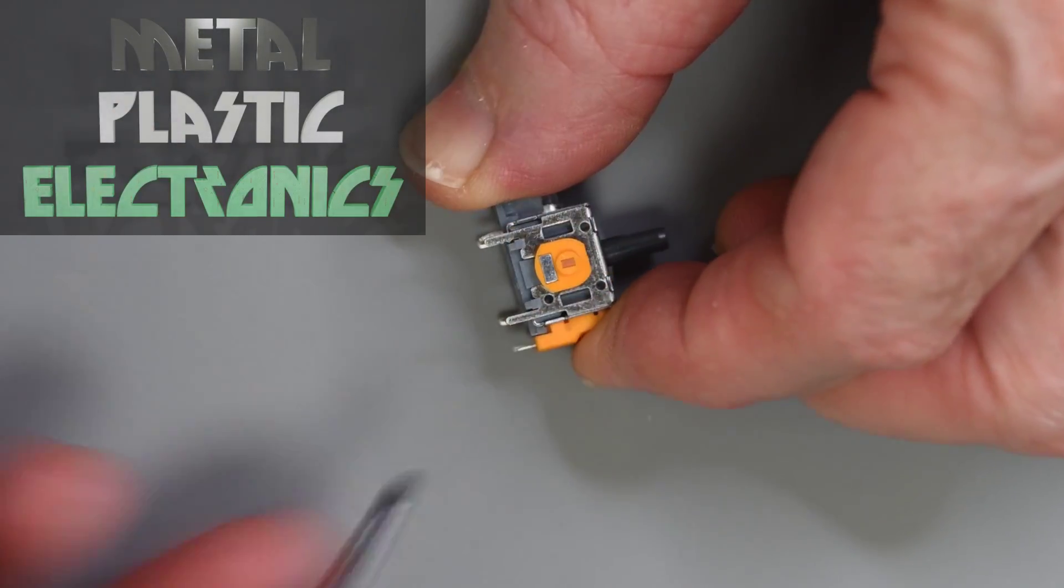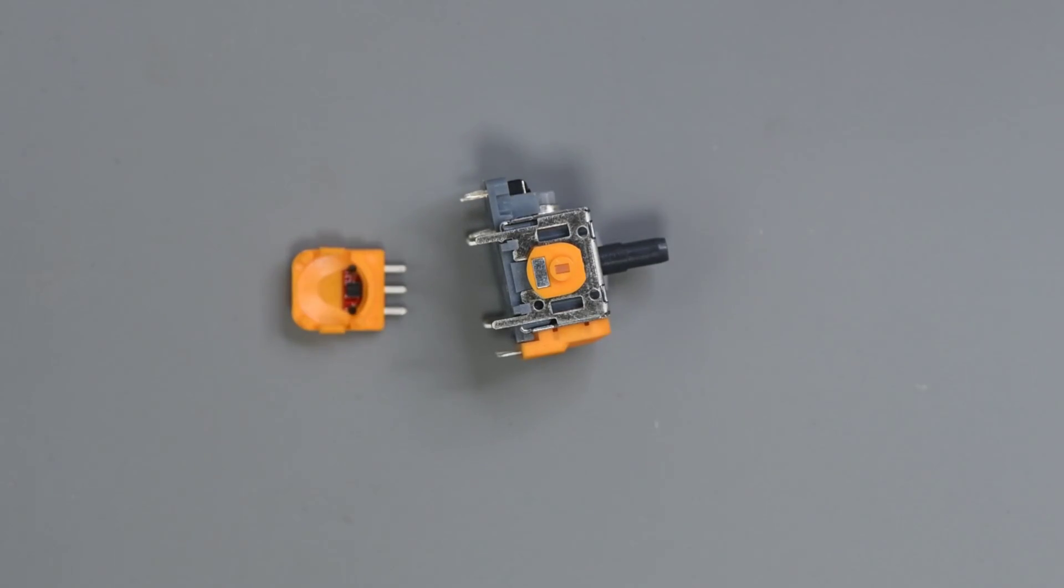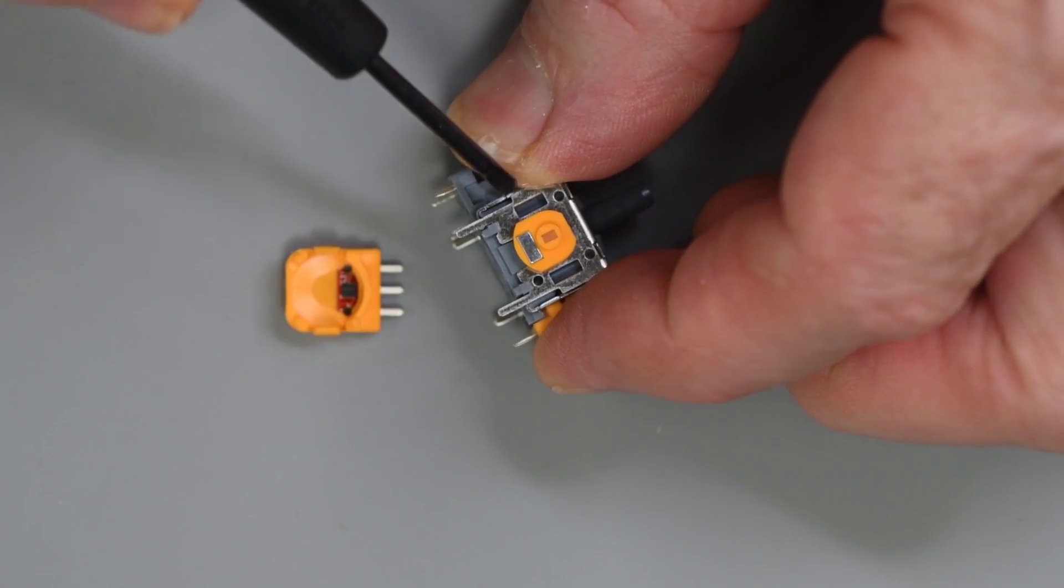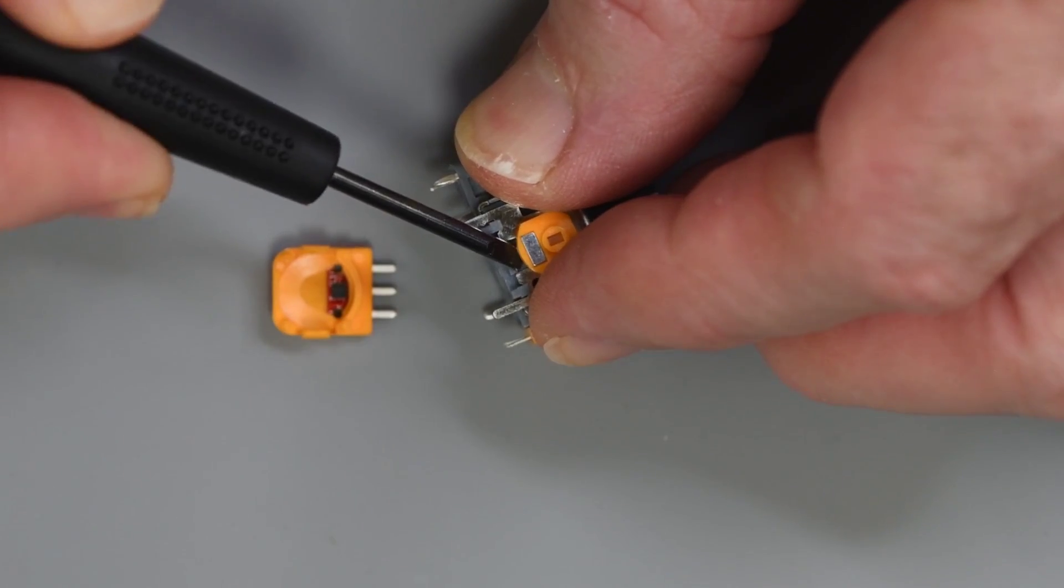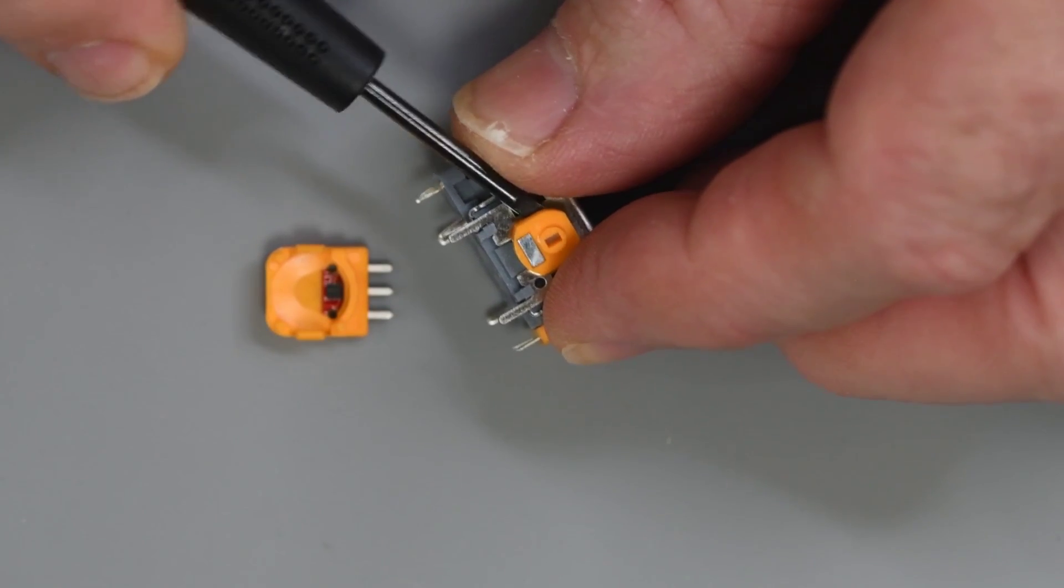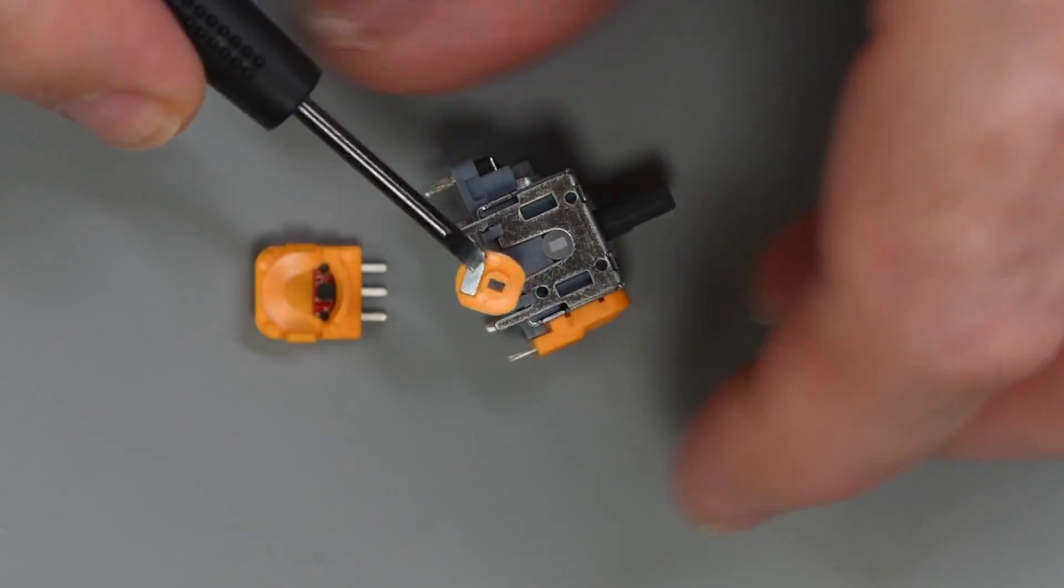A comment got me thinking about the magnets used in these Hall Effect joysticks, really the magnets and the sensors. When I was rotating the two magnets in the joysticks I bought from Amazon, I just assumed the magnet poles were at the ends of the long dimension. It turns out they are, but I didn't do any tests to verify it.